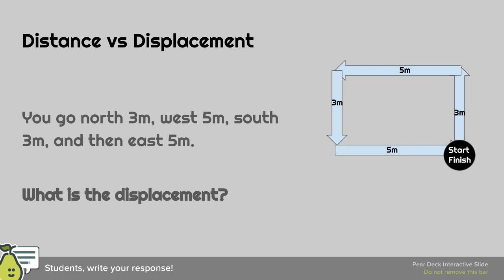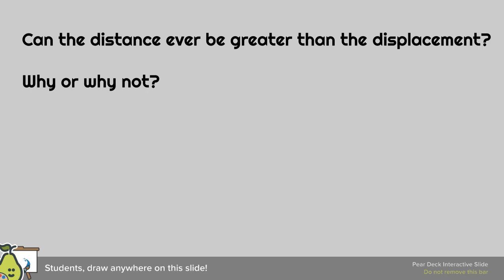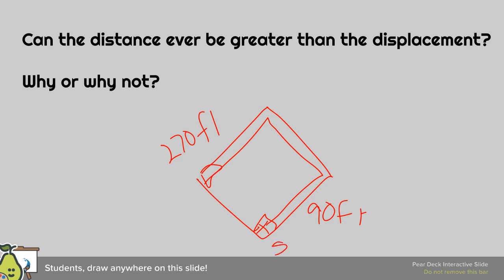Can the distance ever be greater than the displacement? Well yeah, sure. If I look at a baseball diamond, here's home plate. If I get to third base, and these are 90 feet each, I'm at 270 feet. But my starting point is home base to third base, it's only 90 feet. So yes, the distance can be greater than displacement. The displacement can also be zero.